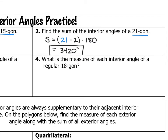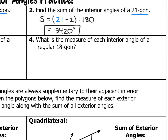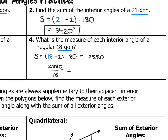Number four: what is the measure of each interior angle of a regular 18-gon? First, find the sum of all interior angles — that's 18 minus 2, or 16, times 180. 16 times 180 is 2,880. To find the measure of one angle, 2,880 divided by 18 is 160 degrees.